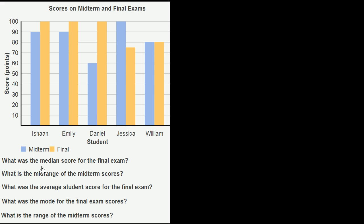The first question: what was the median score for the final exam? As a review, median means the middle score. We should list all the scores for the final exam and sort them in order, then figure out what the middle score is. Let's look at all the scores on the final exam.